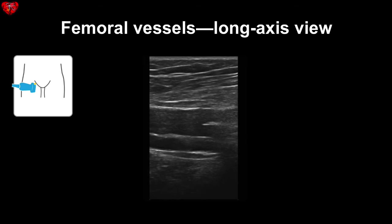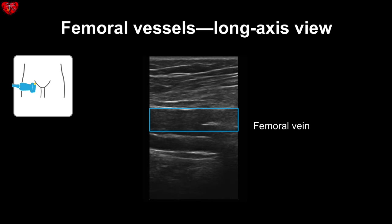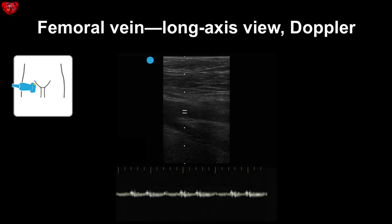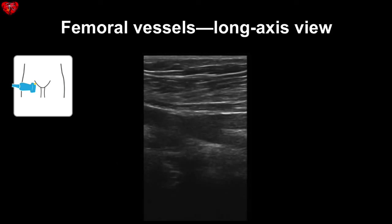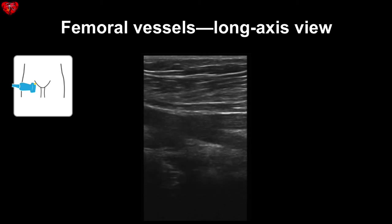Now let's take a look at the long axis view of the vessels. This is when the probe indicator is pointing towards the head, and the vessels will appear more like tubes instead of circles. Here is the femoral artery and here is the femoral vein. Here is a view of the femoral vein in long axis with Doppler — this is where the femoral vein splits to go deeper, and you can again see this low velocity pattern. Here you can see just how close the femoral artery and vein are to each other as the operator fans through in long axis.